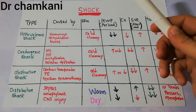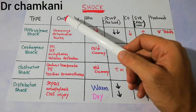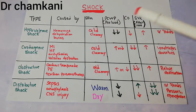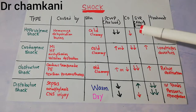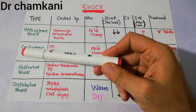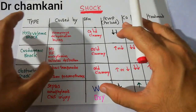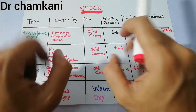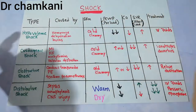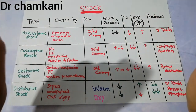Today we are going to talk about different types of shock, the causes of different types of shock, the clinical presentation, and the treatment options available. We have discussed all these types in detail, and now we are going to summarize and differentiate them using some clinical signs and symptoms.